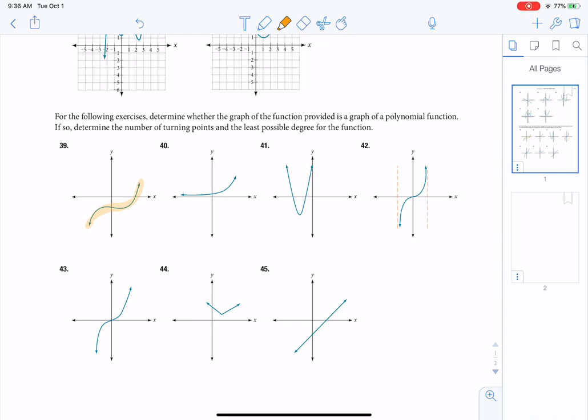To give you a counterexample, at 44, there is a sharp point, so I know 44 won't be a polynomial.